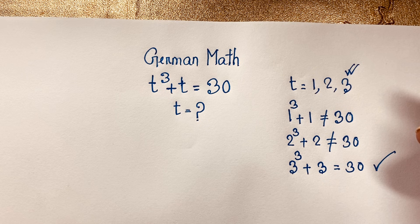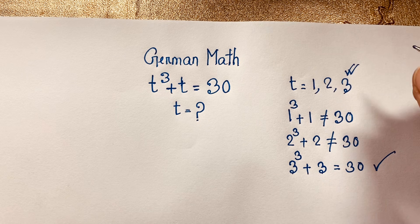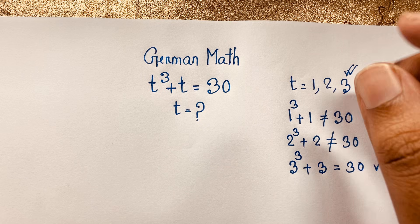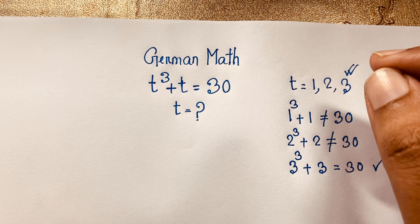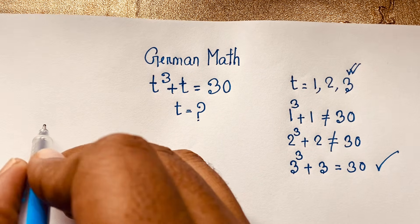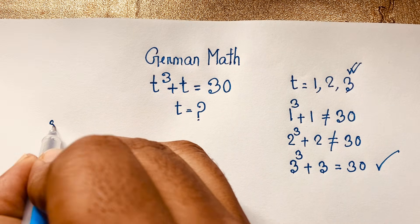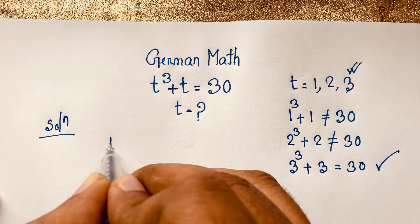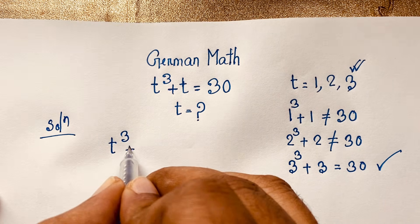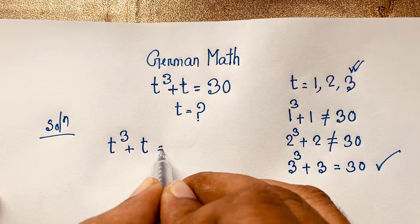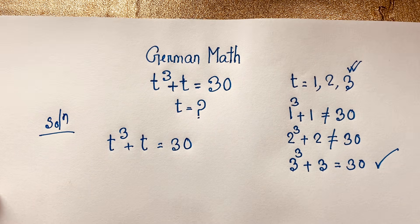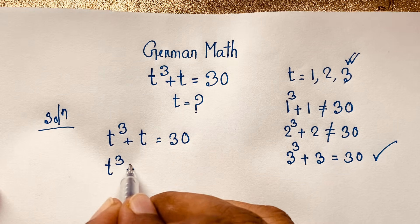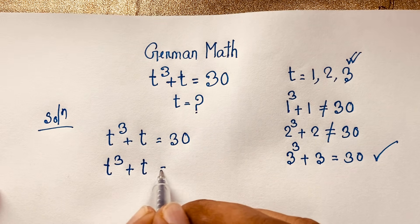But how to solve this interesting math Olympiad question? There are various methods, but I will solve this question using an easy method. Our question is t to the power 3 plus t is equal to 30.